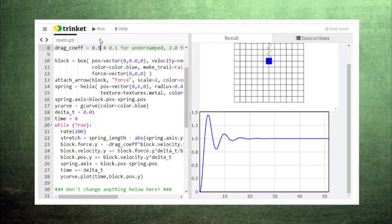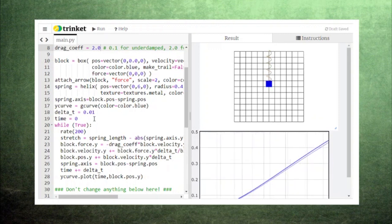In fact, if we increase the drag coefficient high enough, we can see a graph with no oscillations at all, just a single swing toward equilibrium.